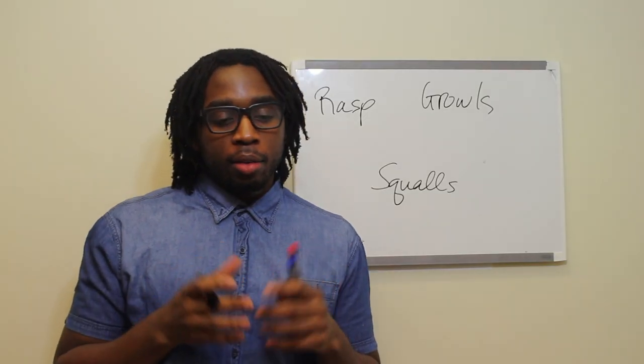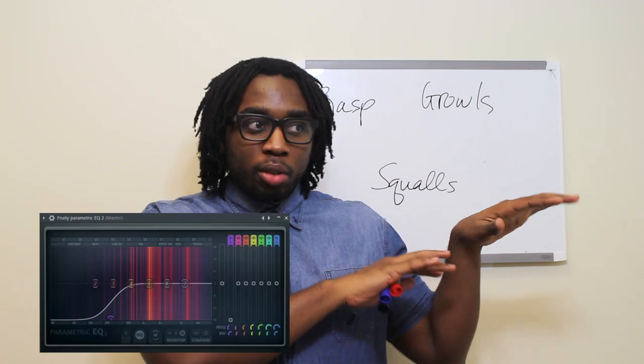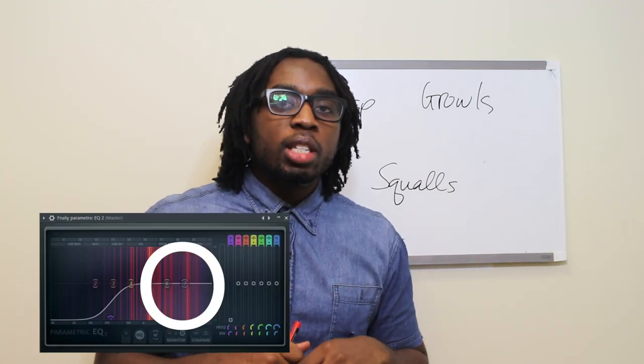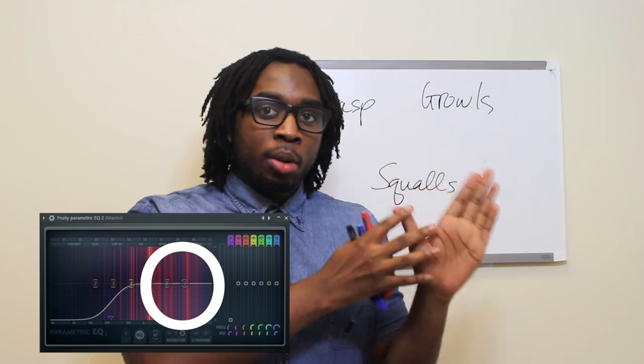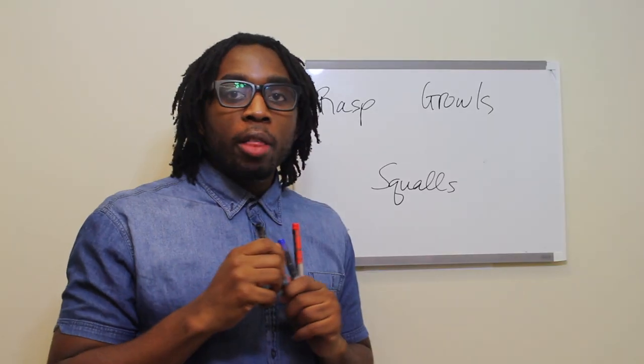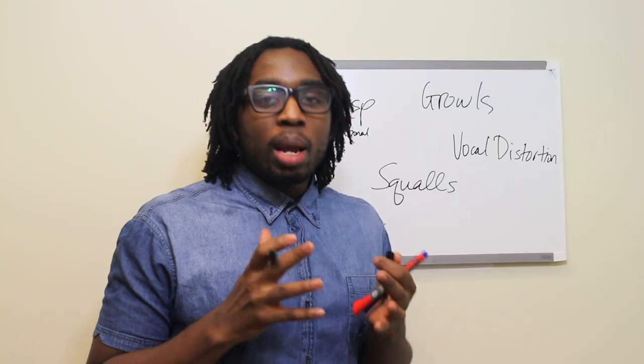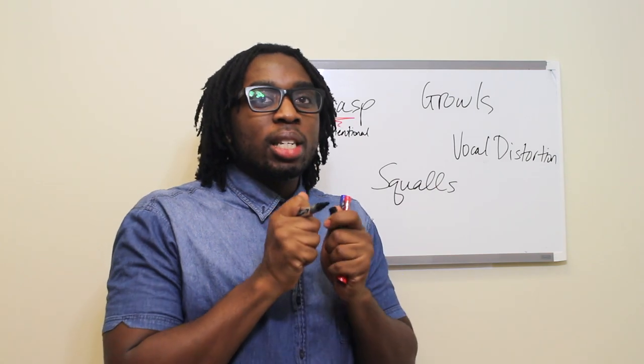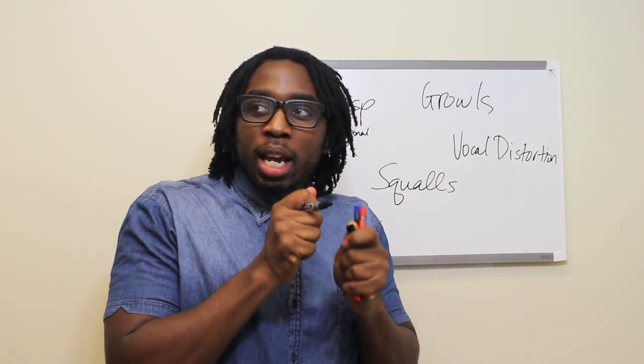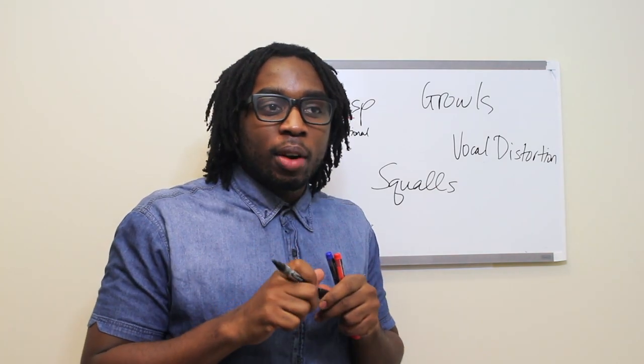If you were to look on a frequency spectrum in the higher parts of the frequency, to the right of the spectrum, you would see a lot of activity going on. We're going to call that vocal distortion. What I mean by vocal distortion is basically there are clicks, there's pops in the voice that aren't necessarily pure.